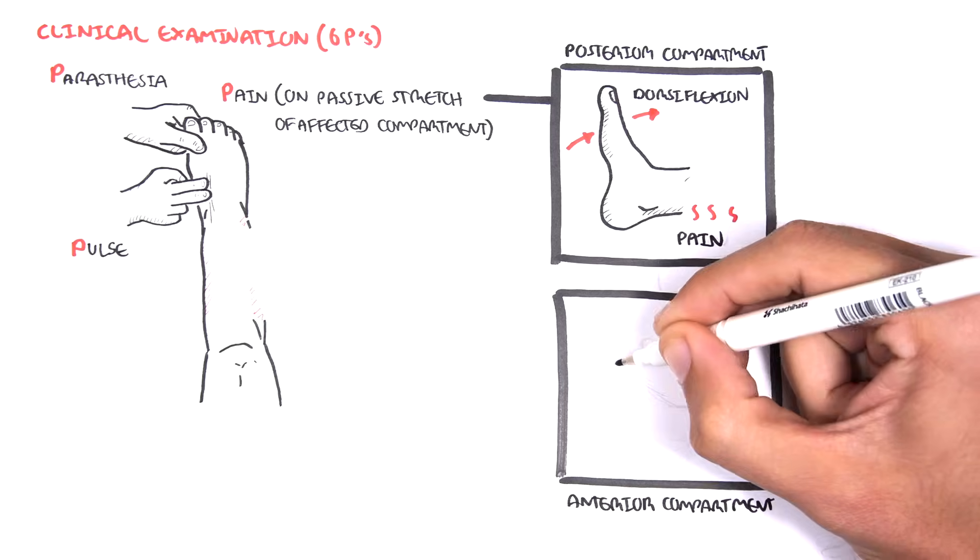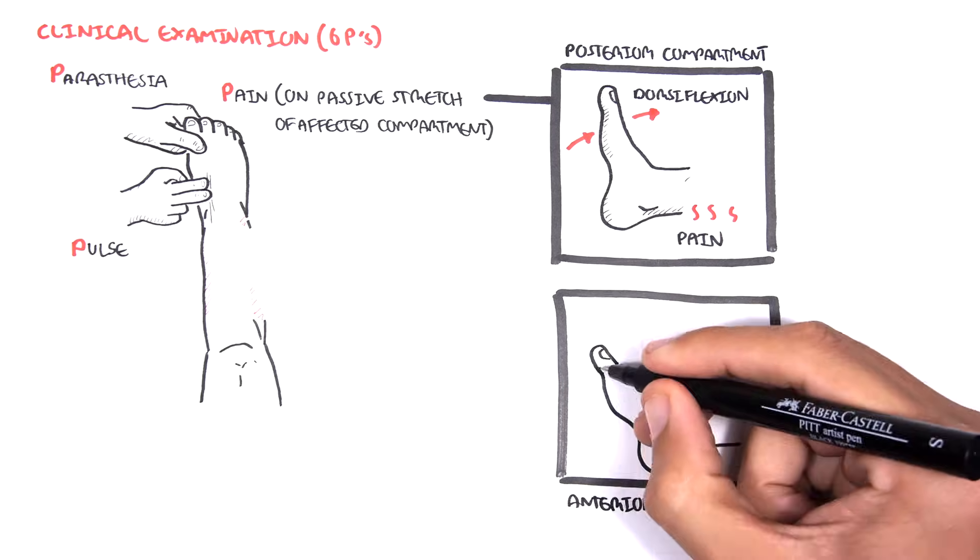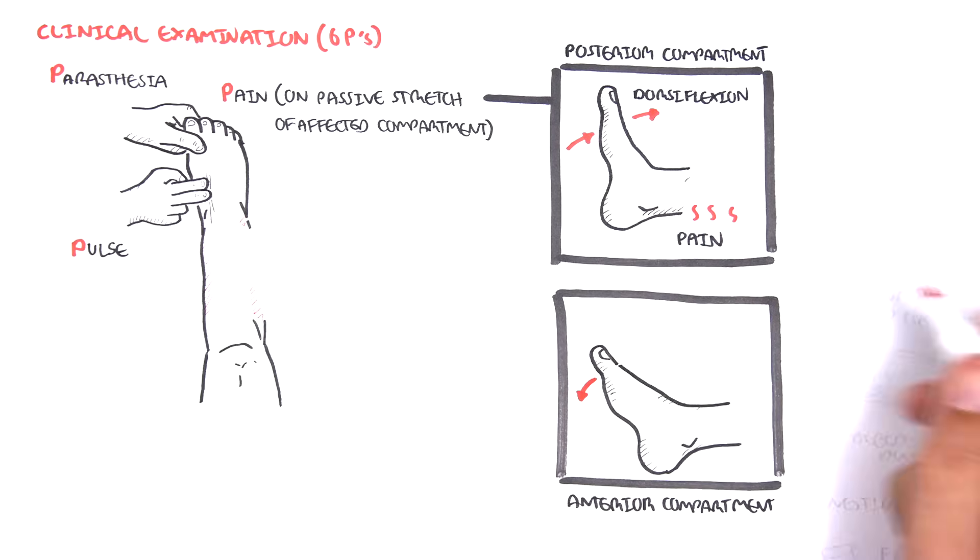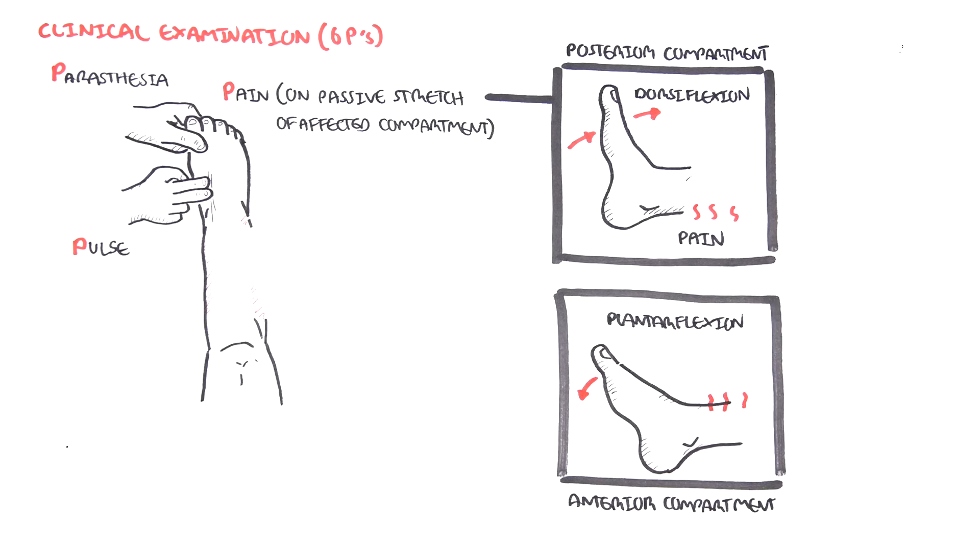Similarly, acute compartment syndrome occurring in the anterior leg compartment can be aggravated by plantar flexing, which stretches that compartment.